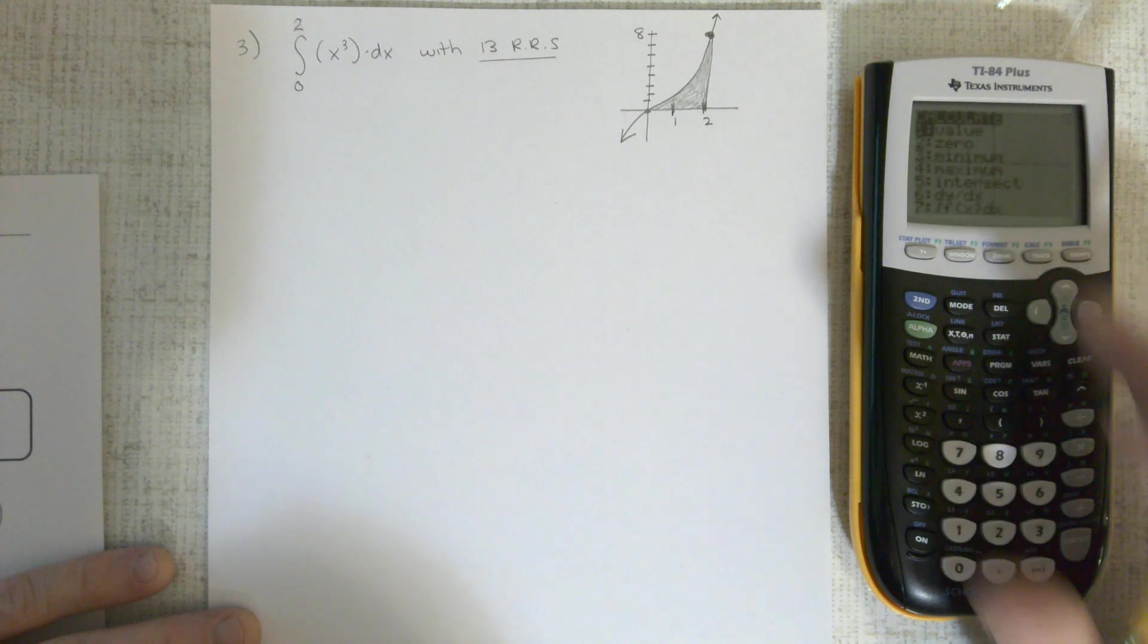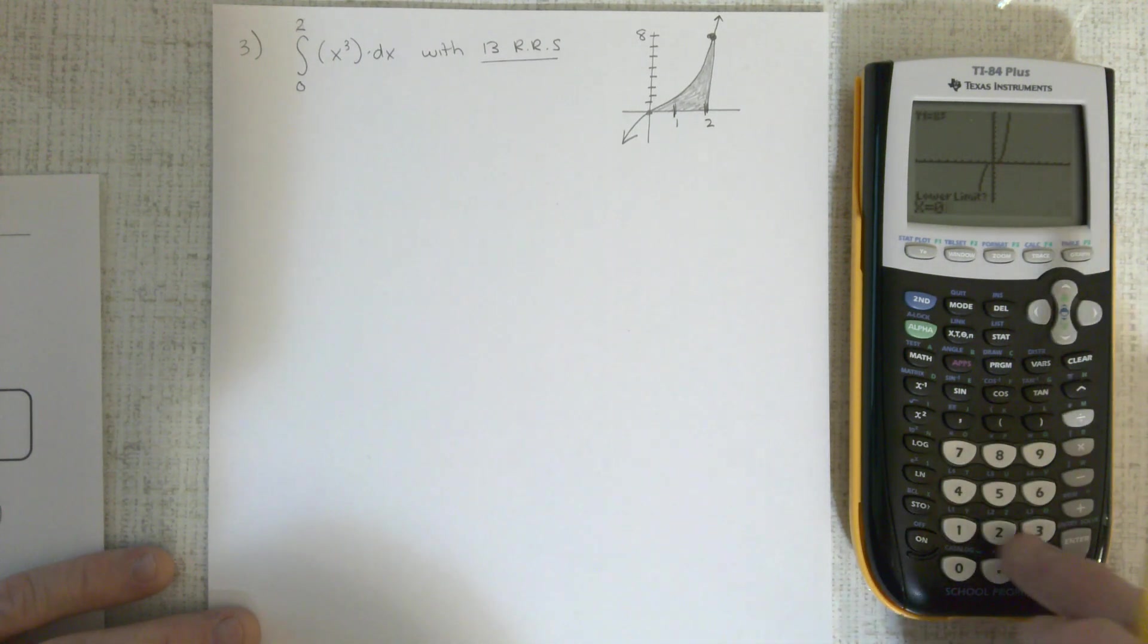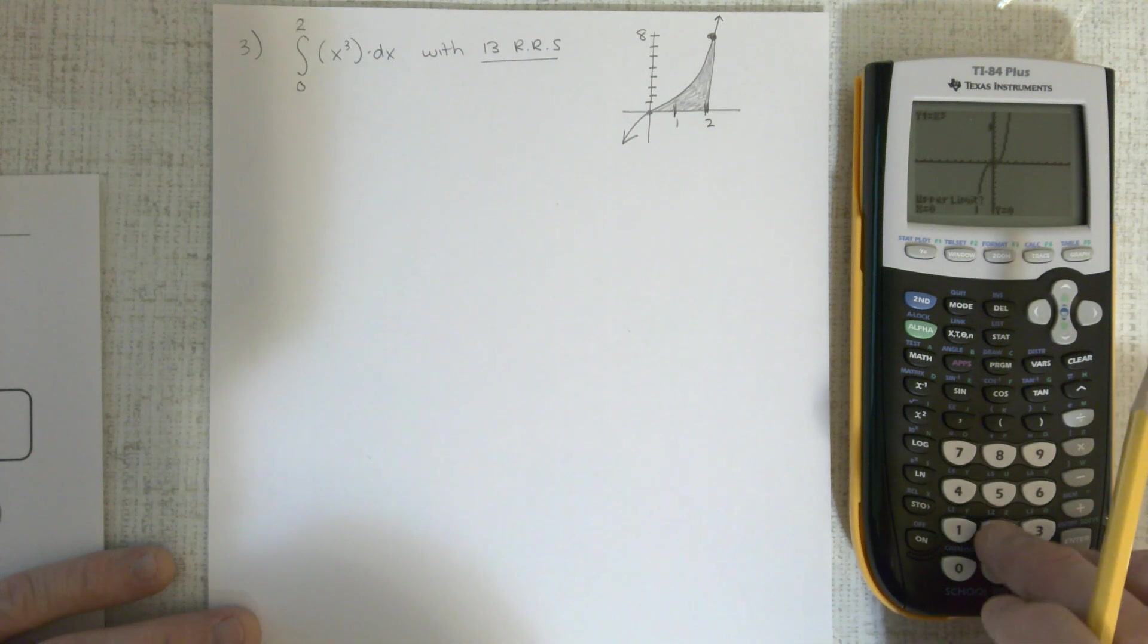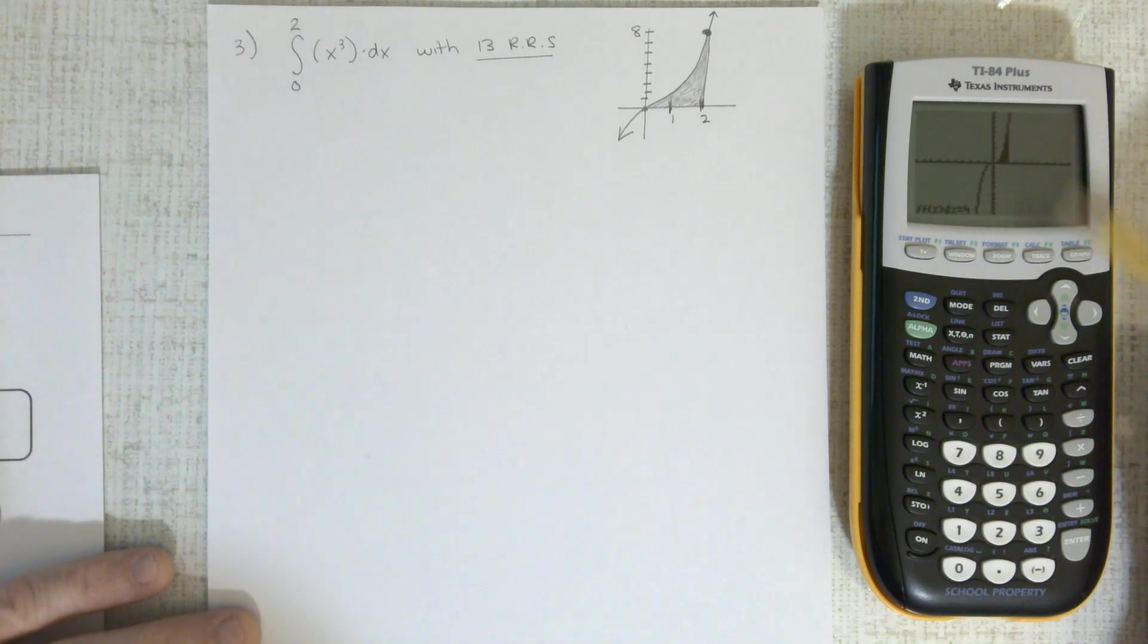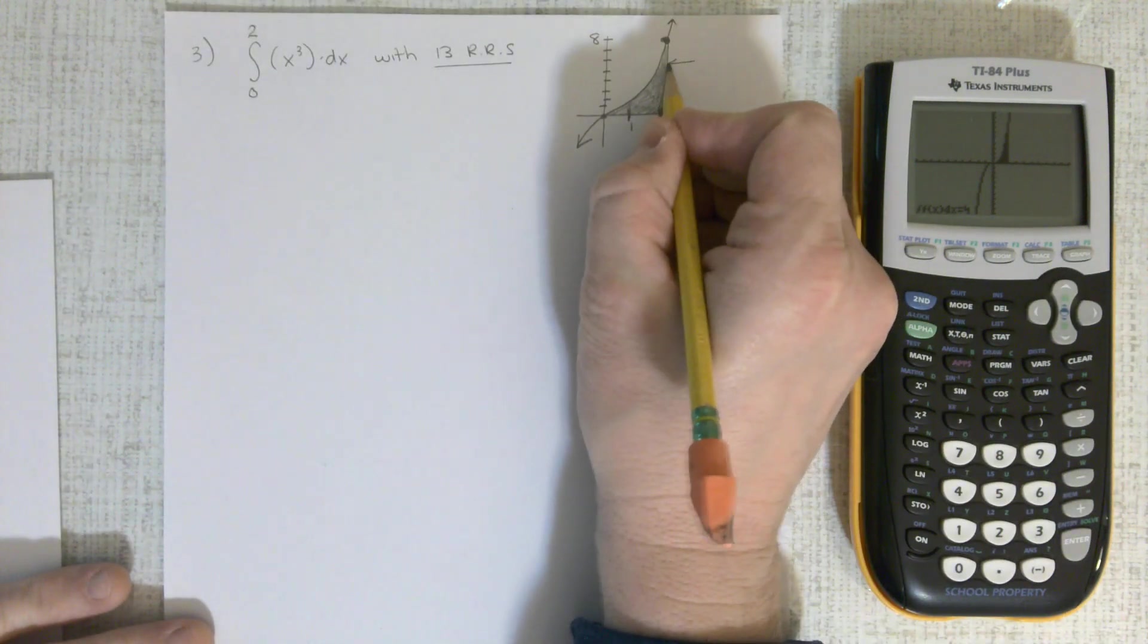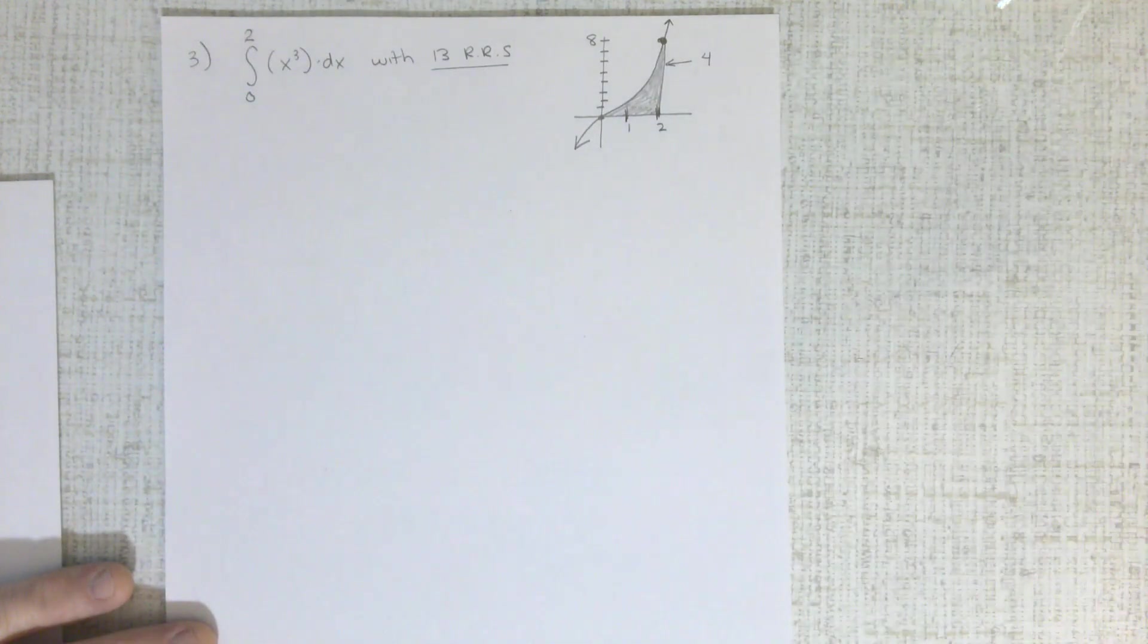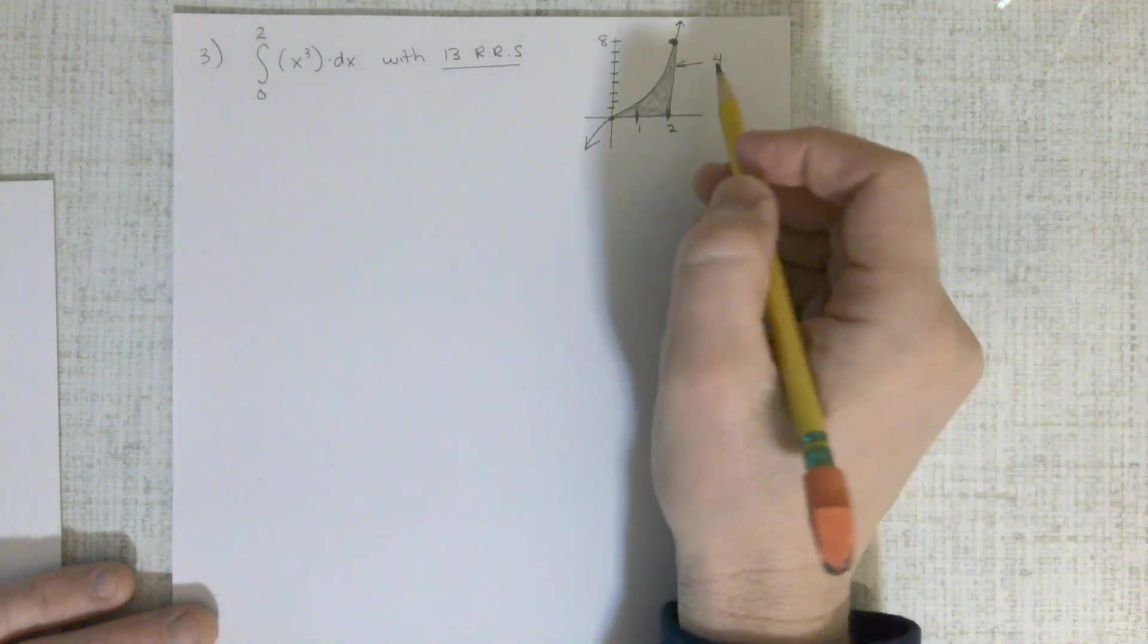So if I hit second, calculate seven minimum zero for the lower upper bound two, it's going to shade it in right there and give us that area. And that area is four exactly. But again, that's not what we're going for. We're not going for that four exactly. So we're not going to worry too much about that.